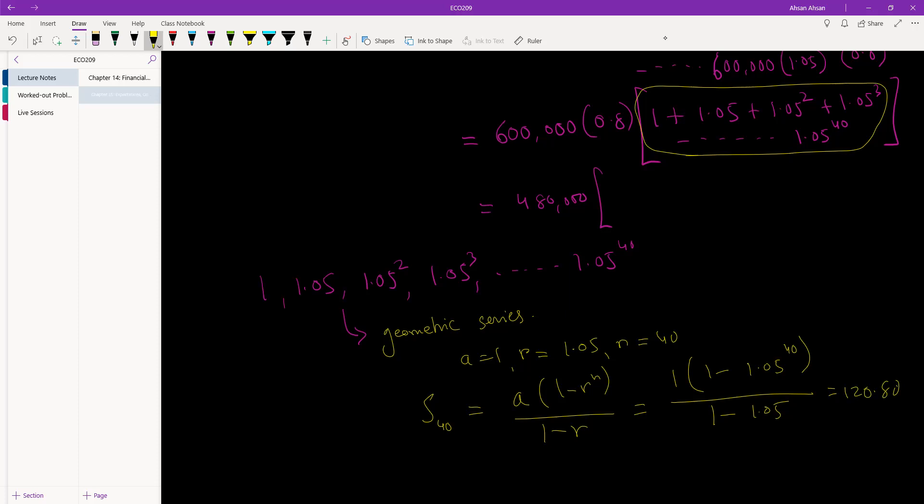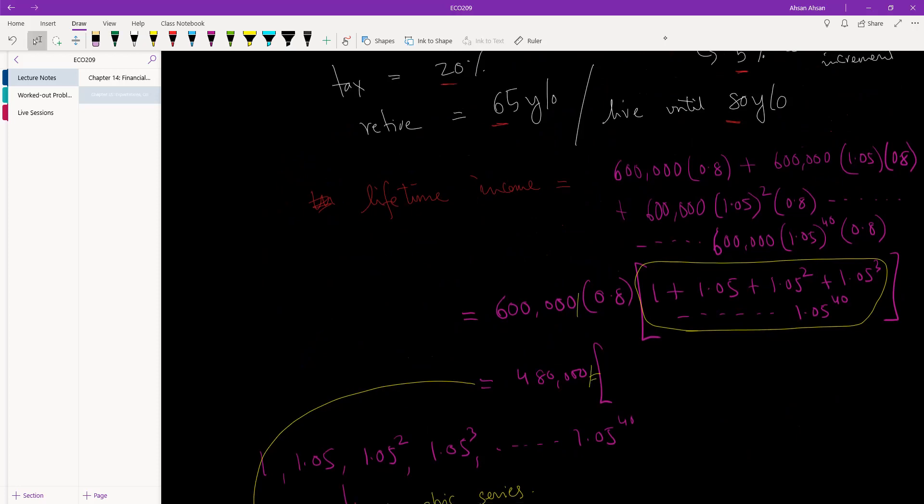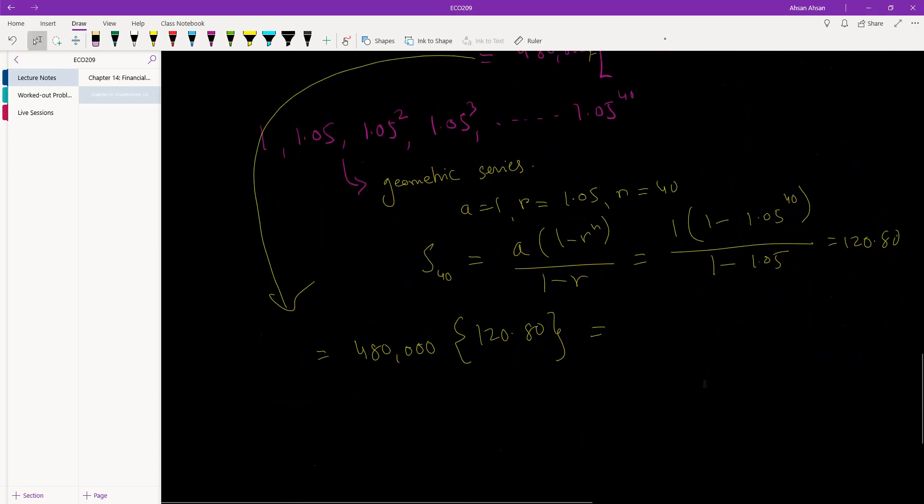let me figure out how much this is, the value of 40, 1 minus 1.05, divided by this, we get 120.80. So let's bring this down here. What we have is 480,000 times 120.80, which gives us, of course, this is in Taka. So what we get here is 57,983,892 Taka. So this is what we call this lifetime income.